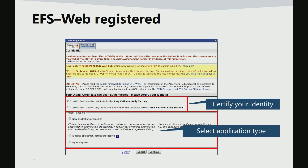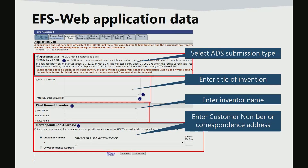After successfully logging into EFS web, applicants need to certify their identity by selecting the appropriate radio button. They can then proceed by selecting the application type followed by the continue button. The next tab of EFS web is the application data screen. On this screen, applicants will be able to select the ADS submission type, enter the title of invention, inventor name, and the correspondence address. For the correspondence address, applicants may select from the drop-down any customer number associated to their account, or enter a physical address. An advantage of using the customer number is that the application can be associated with the number, thus allowing the application status to be viewed in Private PAIR.